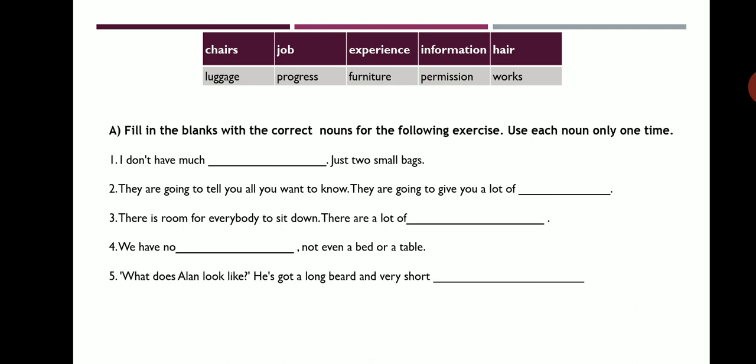Fill in the blanks with correct nouns for the following exercise — use each noun only once. First: 'I don't have much dash, just two small bags.' The word box contains: chairs, job, experience, information, hair, luggage, progress, furniture, permission, works. The correct answer is luggage.